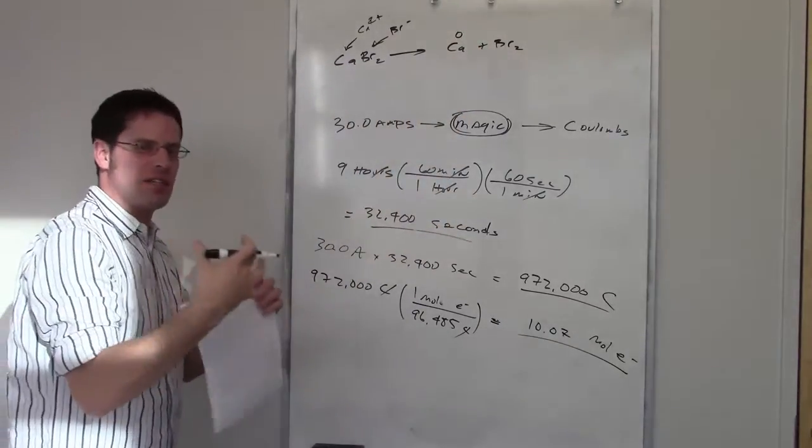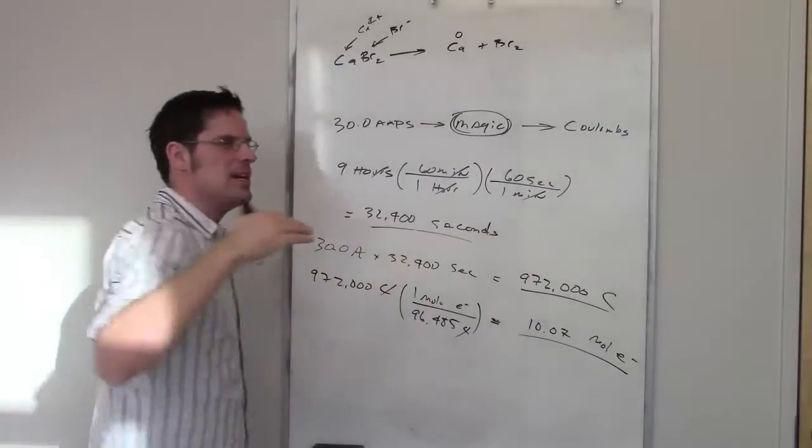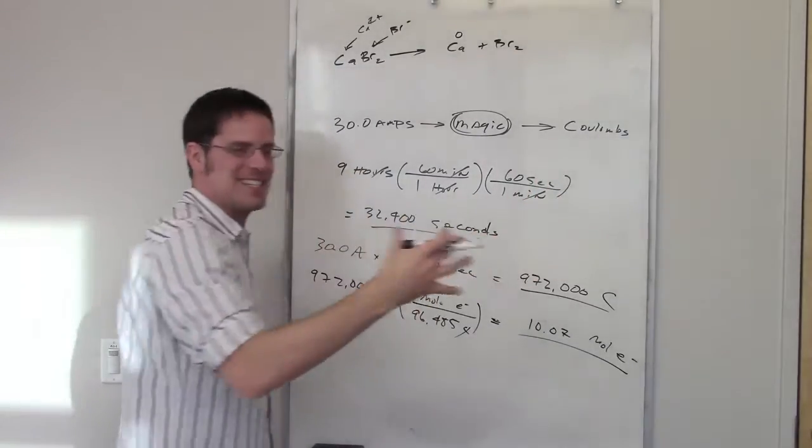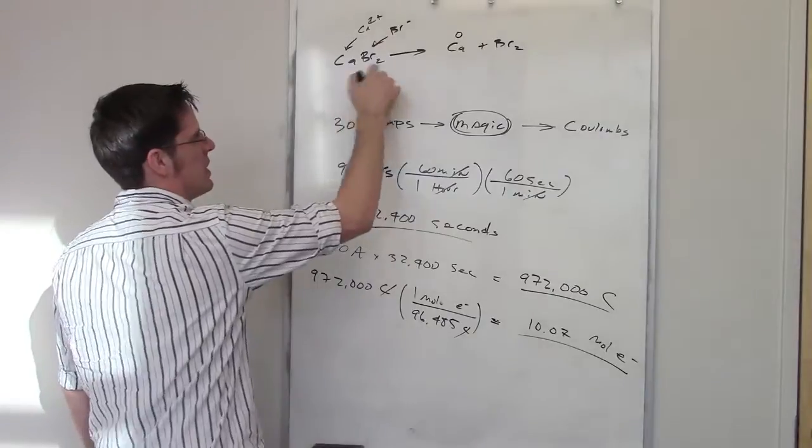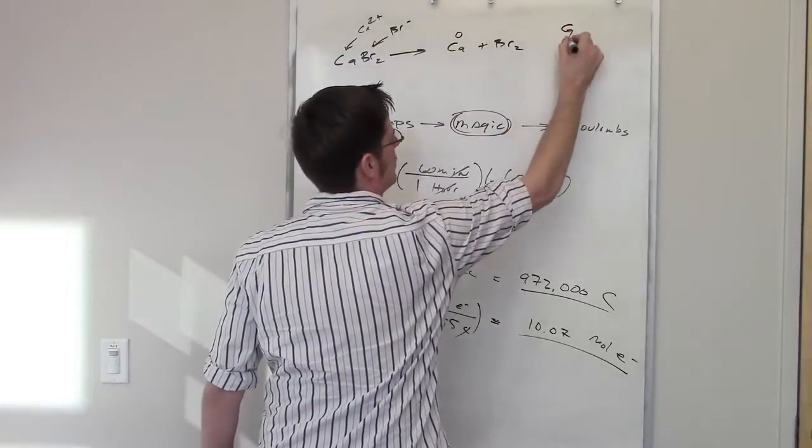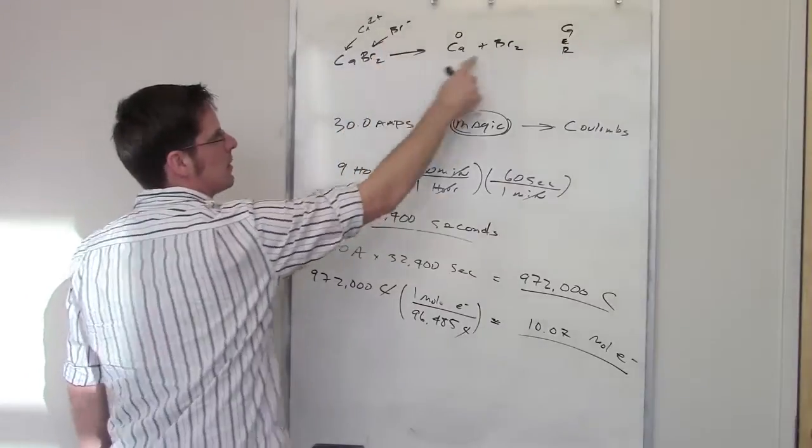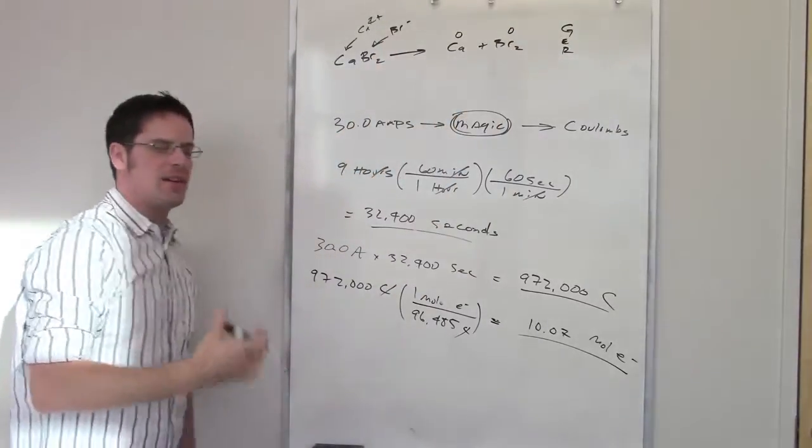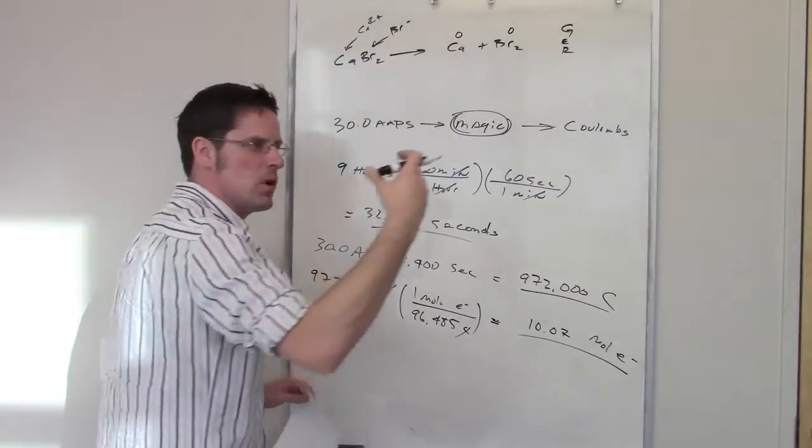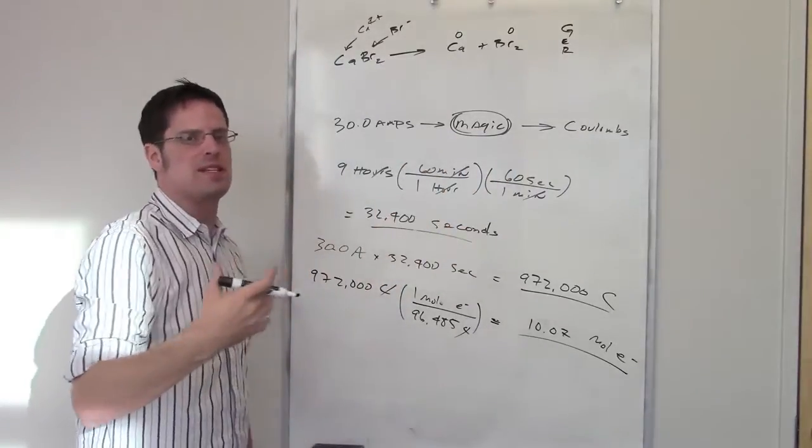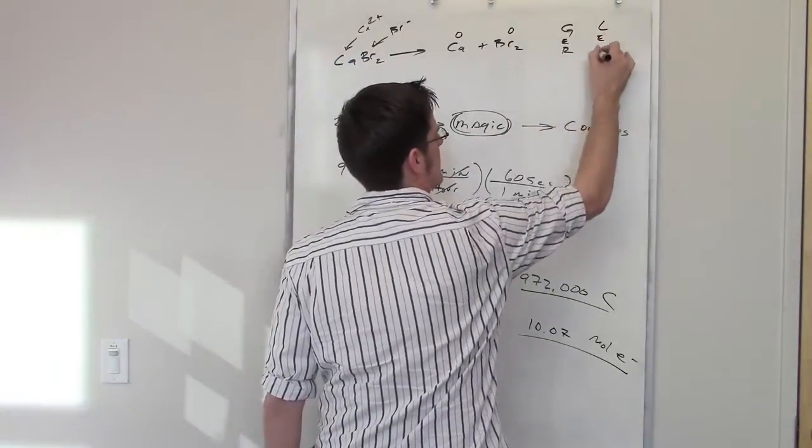Notice I've got calcium two plus going to calcium zero. That is a positively charged calcium going to zero. It's becoming more negative, which means it's gaining electrons, which means that that, I'll go ahead and write down my gaining electrons, is reduction. I've got Br minus one going to Br zero. I've got something that's got a negative one going to zero. It's becoming more positive, which means that it's losing electrons, so that is oxidation.